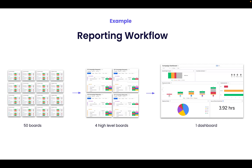We also recommend that you define which reporting needs are must-haves and which are nice-to-haves, in order to best prioritize. This will help you build your boards with reporting needs in mind, while ensuring you avoid the risks outlined in Chapter 1 — slower board performance and poor user experience. In the next chapter, we will continue with our recommended best practices, diving into automations and integrations and what to bear in mind when building these out.